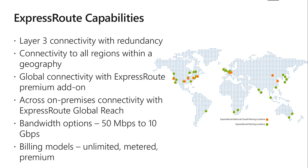There are also flexible billing models — you can pick the one that works best for you. There are three options: Unlimited, where billing is a monthly fee and all inbound and outbound data transfer is included; Metered, where it's a monthly fee with all inbound transfer free but outbound data transfer charged per gigabyte; and the Premium add-on, which includes increased routing table limits, increased number of VNETs, global connectivity, and connections to Office 365 and Dynamics 365.